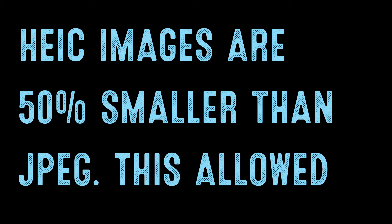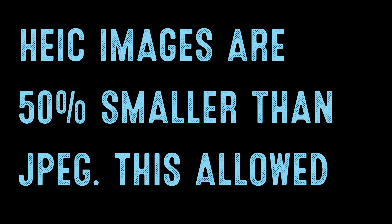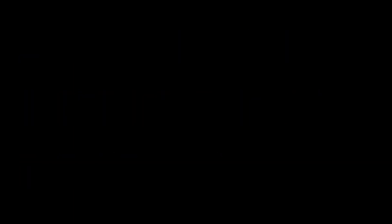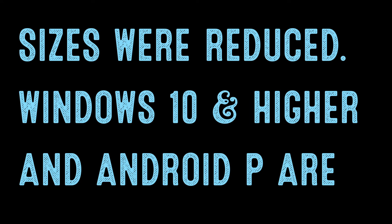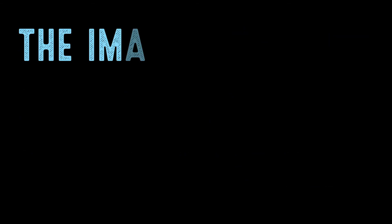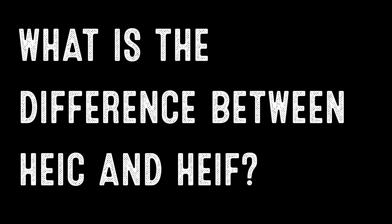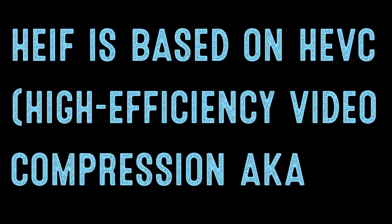HEIF — High Efficiency Image Container — was adopted in 2017 by Apple with iOS 11 and Mac OS High Sierra. HEIF images are 50% smaller than JPEG, which allowed Apple devices to store more images. Windows 10 and higher and Android P are starting to support HEIF, but older systems would need the image to be converted to JPEG when sharing.